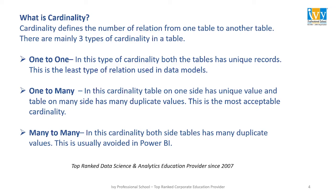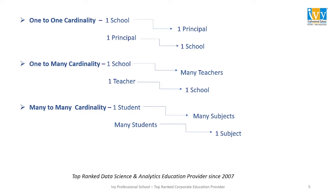One-to-many: in this cardinality, the table on the one side has unique values and the table on the many side has many duplicate values. However, this is the most acceptable cardinality while we are building a data model. For example, one school can have many teachers, but one teacher can teach in only one school. So here the relationship is one-to-many.